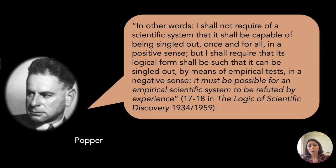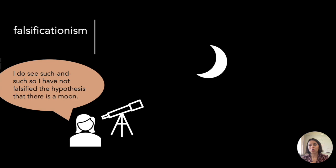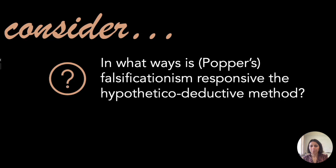Popper adds: 'It must be possible for an empirical system to be refuted by experience.' For our astronomer, on the hypothetical deductive method she confirmed there is a moon by seeing the predicted quality. On Popper's view, when she sees such and such, she has simply not falsified the hypothesis that there is a moon — she hasn't verified it. The hypothesis remains viable. We ask: in what ways is Popper's falsificationism responsive to the hypothetical deductive method?